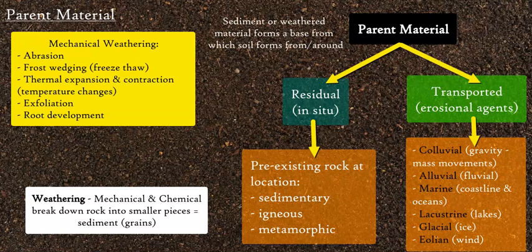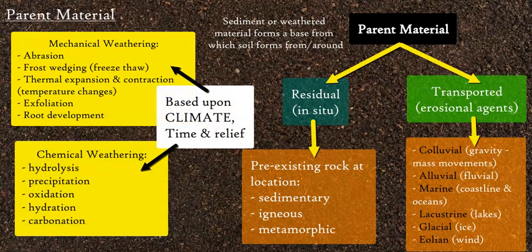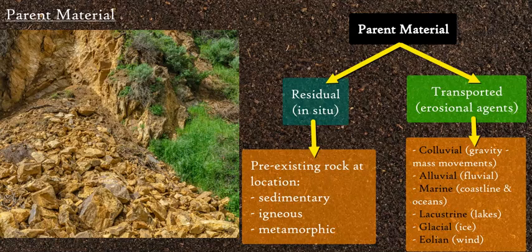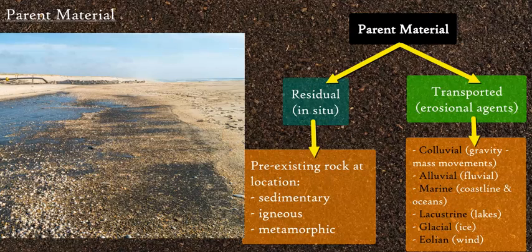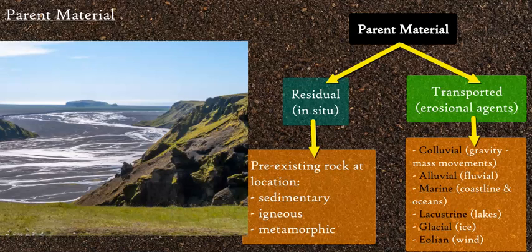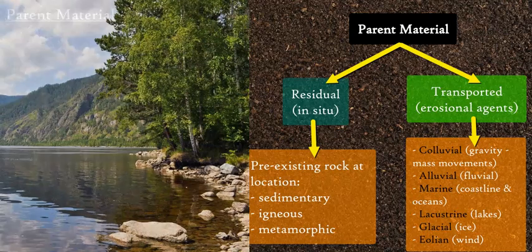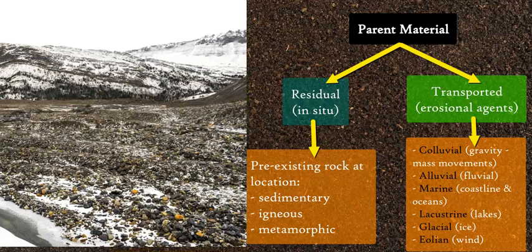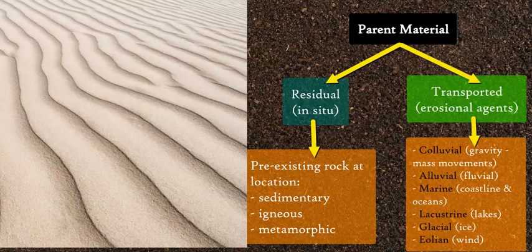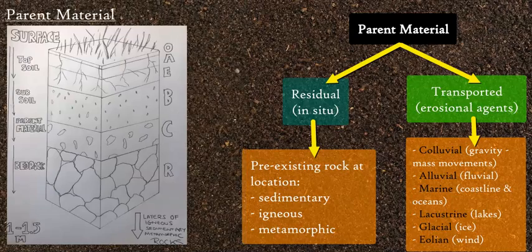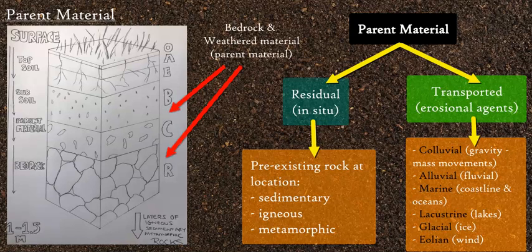The underlying exposed bedrock is very important. There are two ways to build parent material: residual in-place (in situ) weathering of the rock, or transported material brought to a location through various agents — gravity/mass movement such as landslides, rockfalls, or talus; water bringing alluvial material through rivers and streams, marine material through estuaries and oceans, and lacustrine material through lakes; ice bringing material through glaciers, erratics, and terminal moraines; and wind (aeolian transportation) bringing in smaller material called loess.